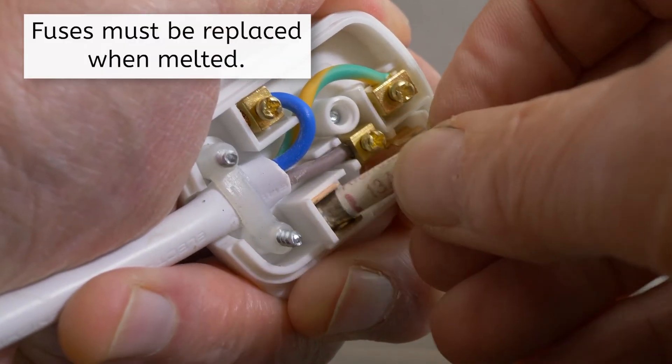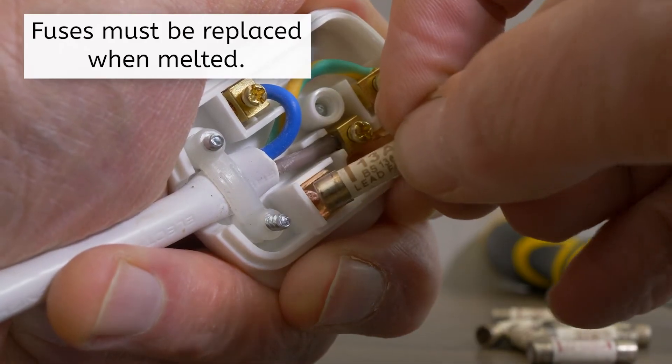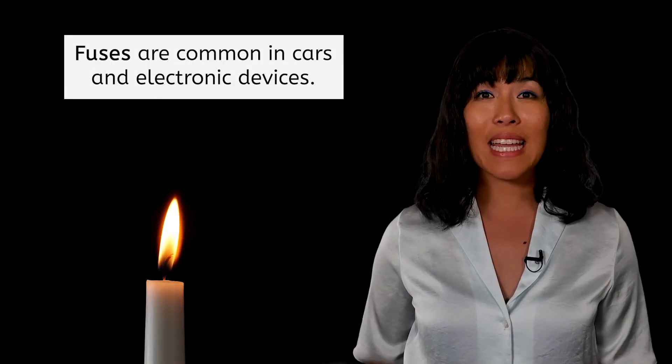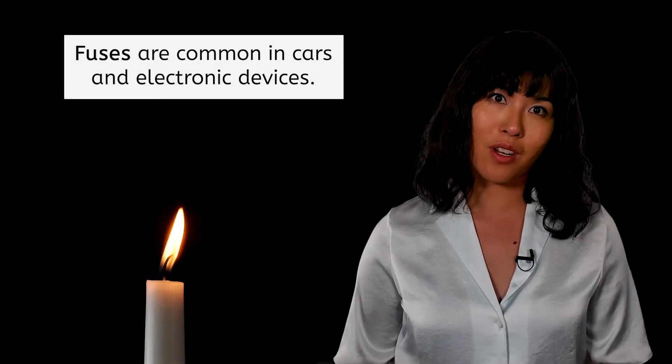Because the metal is now melted, the fuse will have to be replaced before the circuit can become a closed loop again and turn on. I'm pretty sure there are no fuses in my main home circuit though, as they are more commonly used in the electronic systems of cars and individual electronic devices.